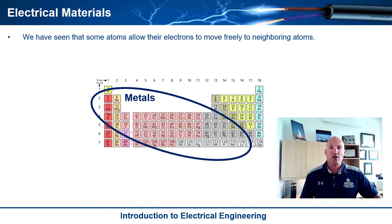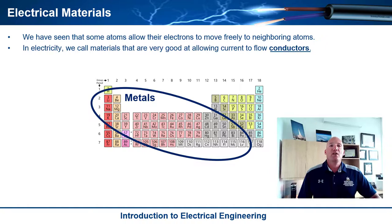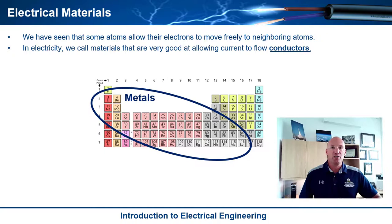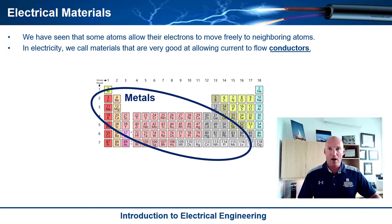In the periodic table, most elements are metals. But in electricity, we call materials that are very good at allowing current to flow conductors. Not all metals make good conductors, but there are some that are extremely good at allowing their electrons to move to other neighbors. We tend to use a certain number of these elements and also compounds in order to create the materials that we use to move electricity around, specifically current.